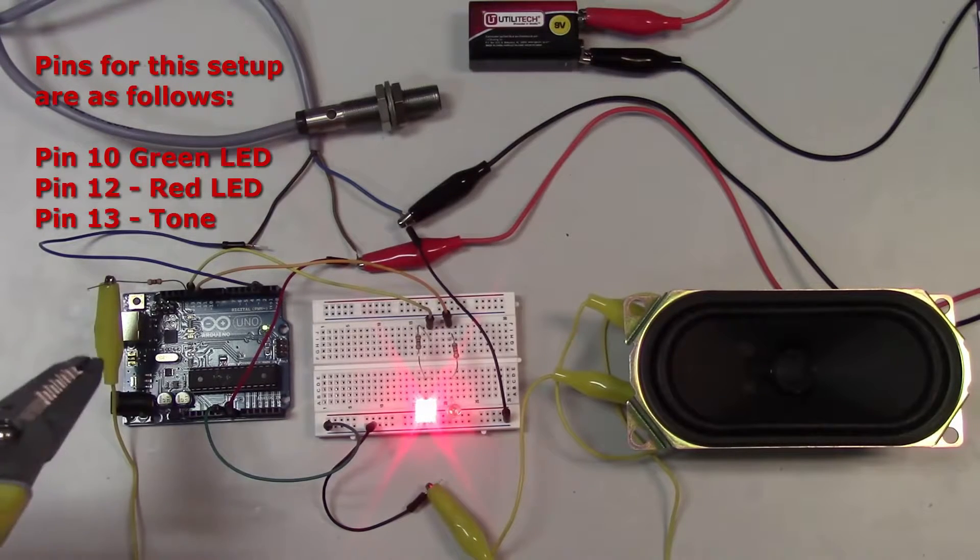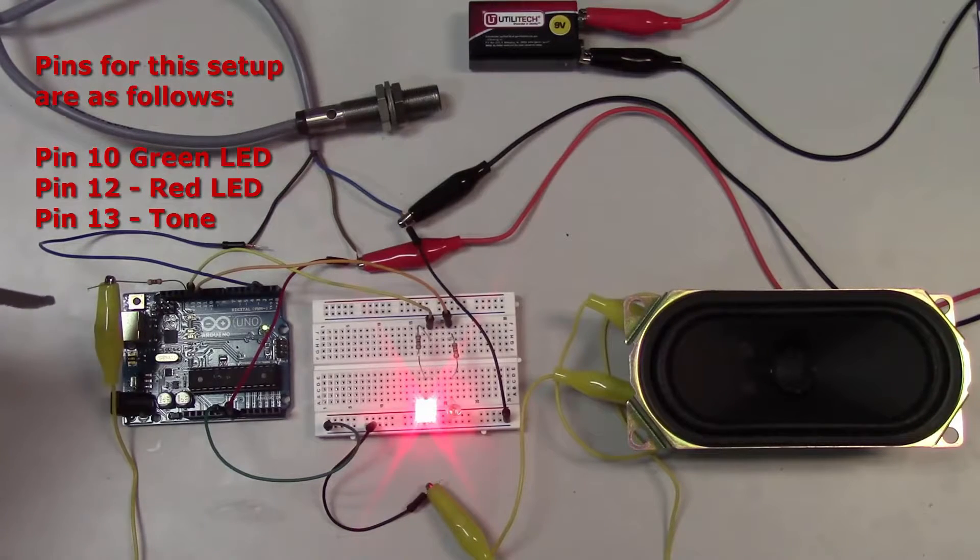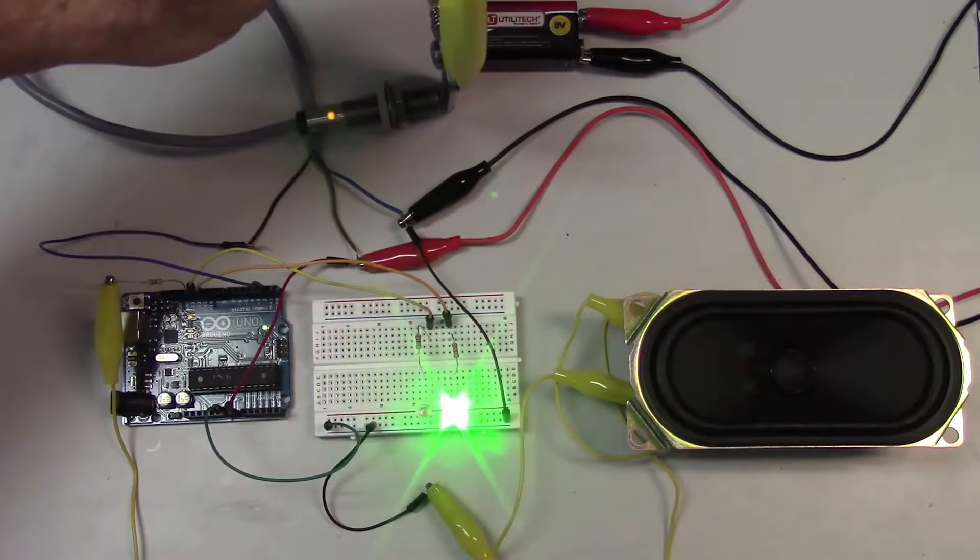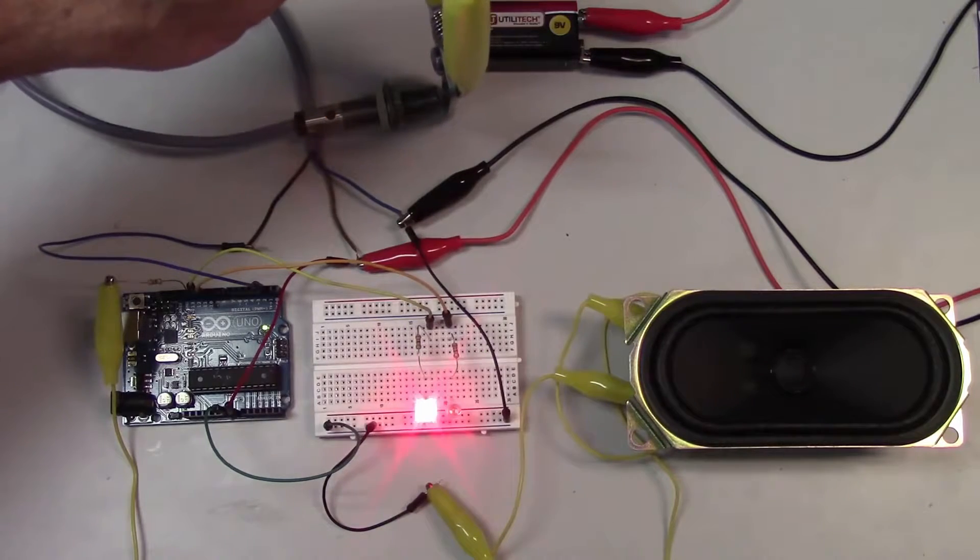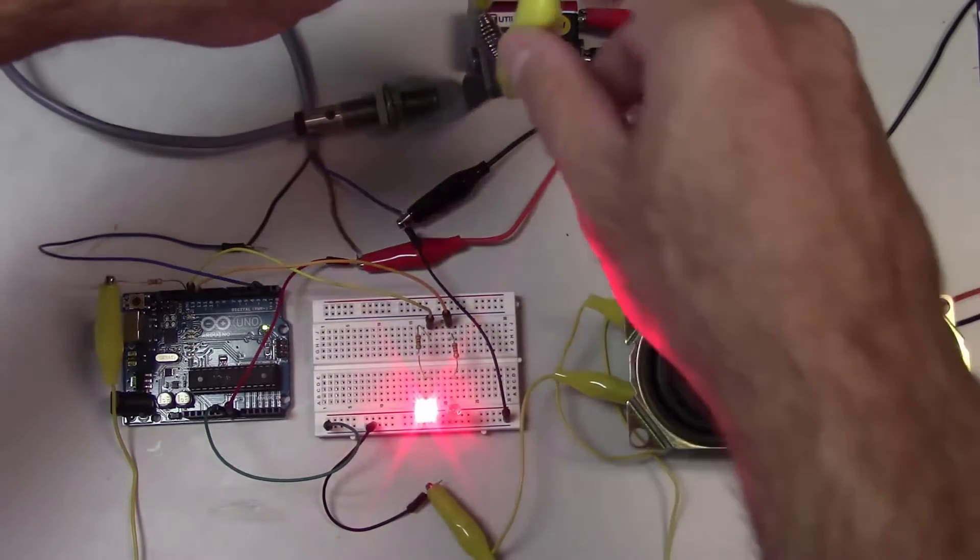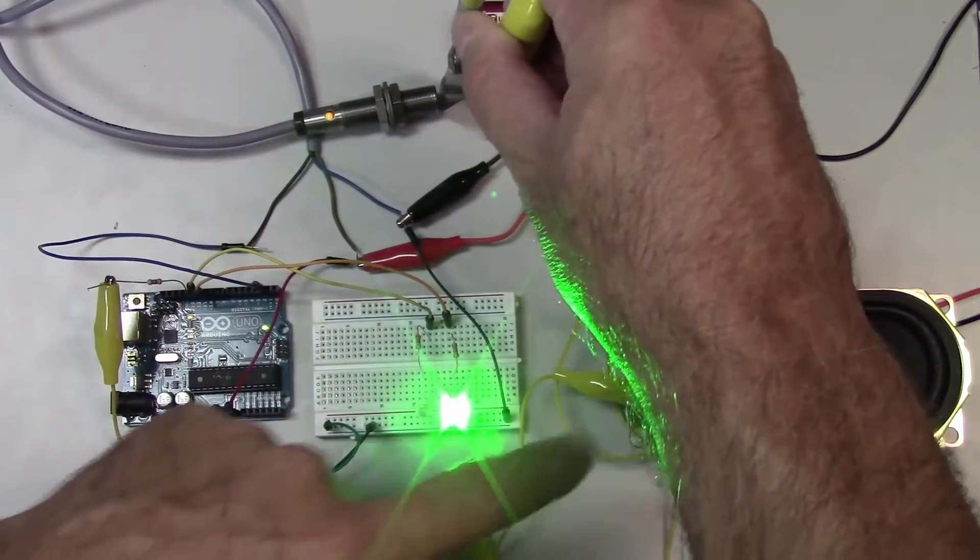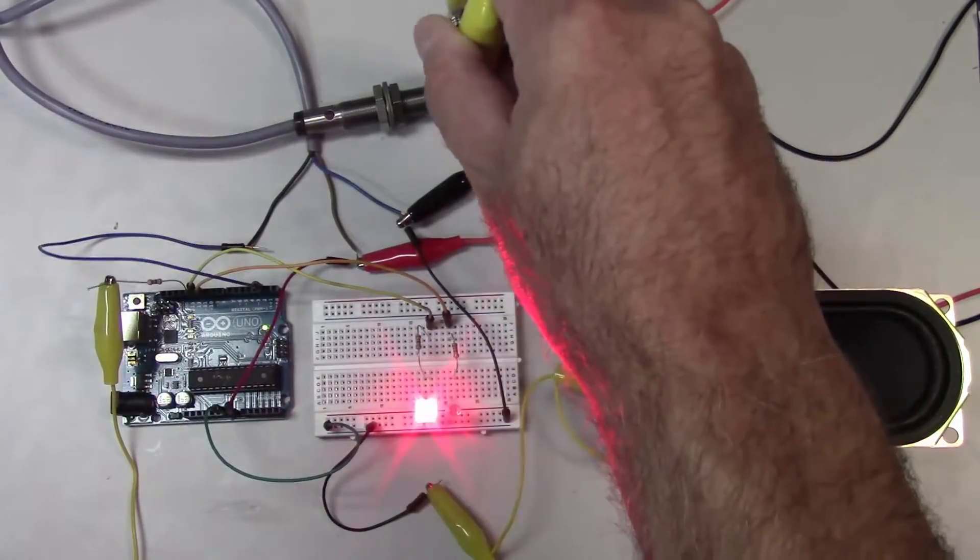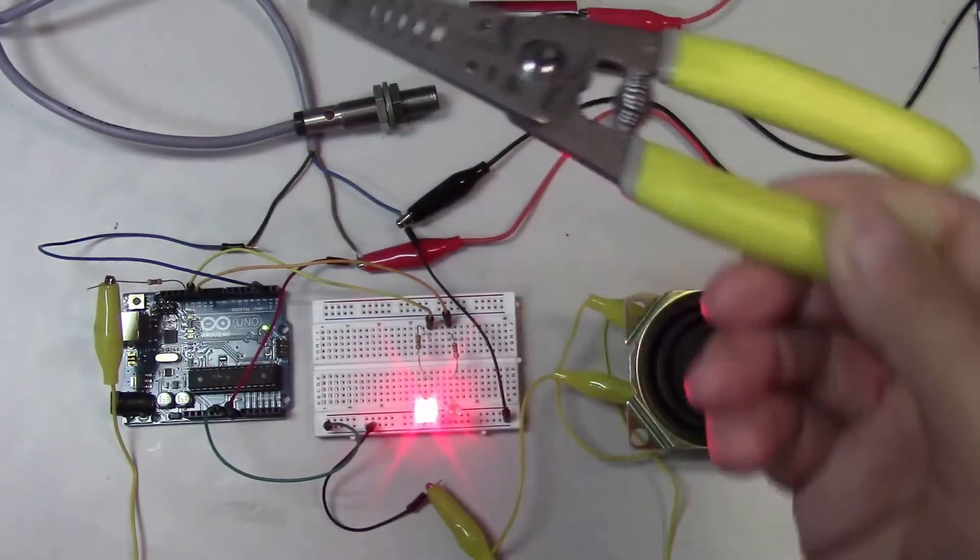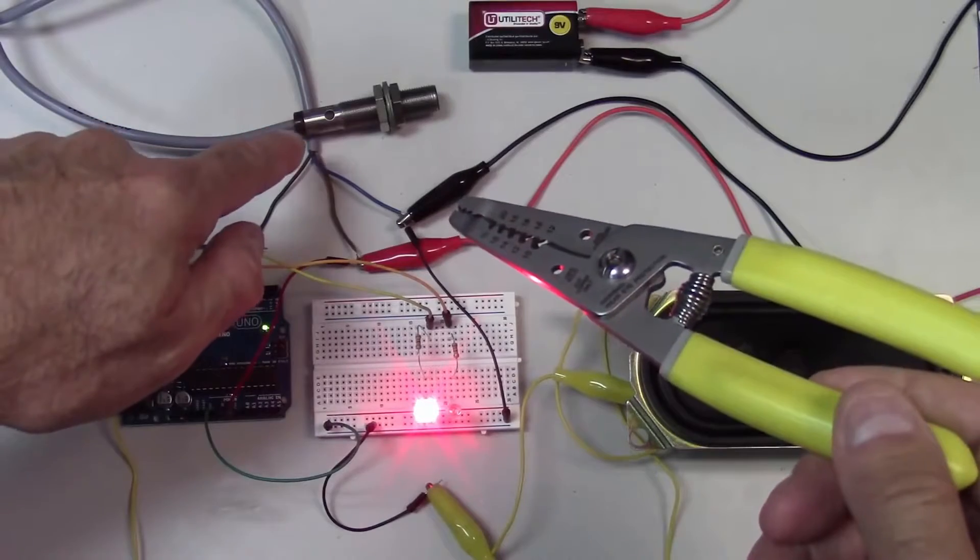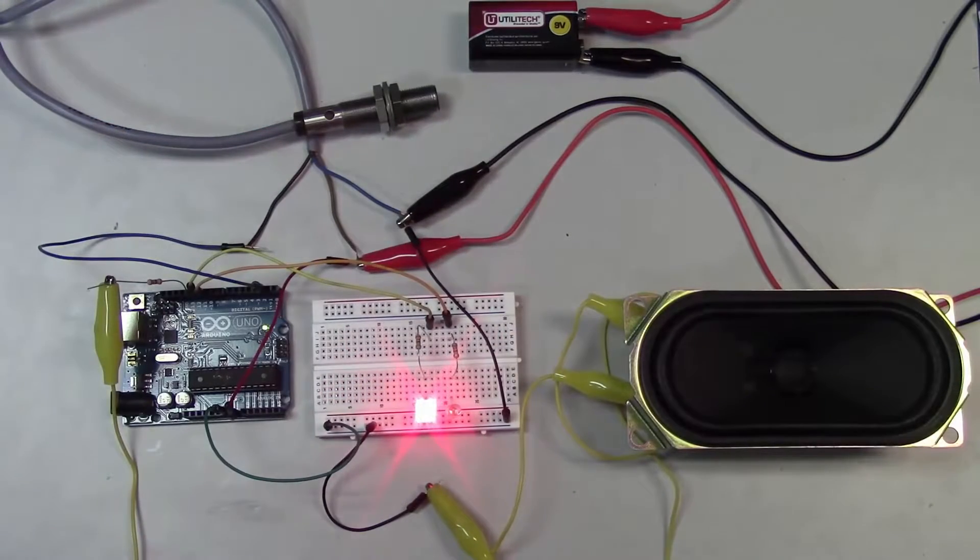I've also programmed pin 13 to output a tone, a one kilohertz tone, when the sensor is activated. And I'll show you the code here in a minute. You can see the sensor activated, the green light coming on, and you hear the tone when I put this wire stripper in front of this inductive proximity sensor.